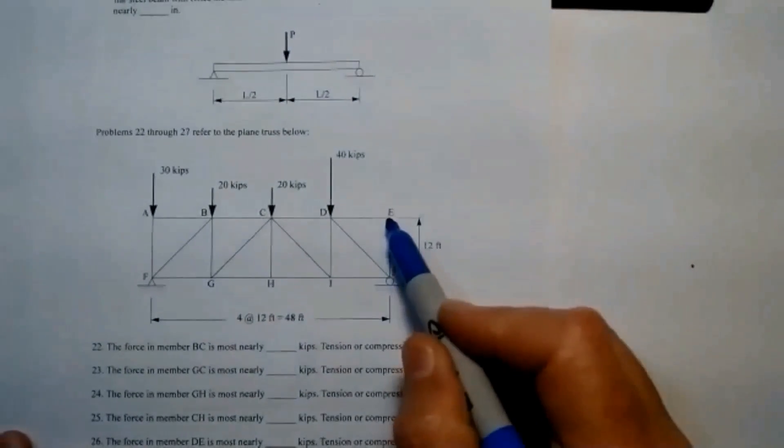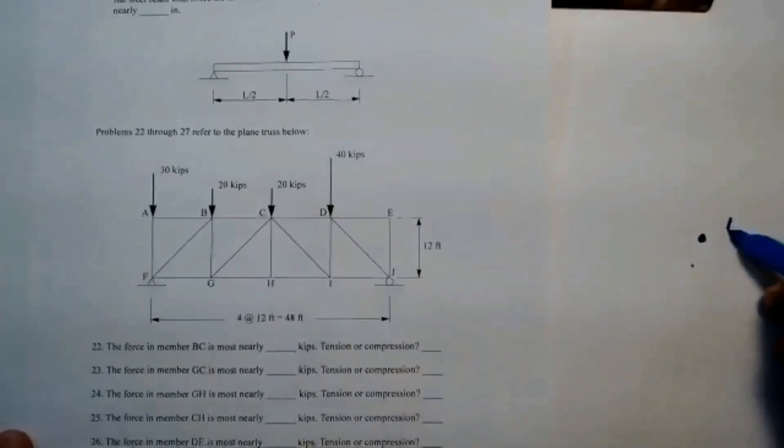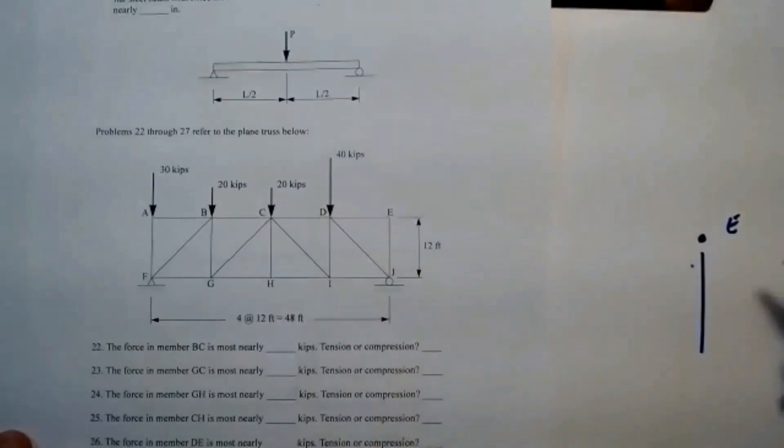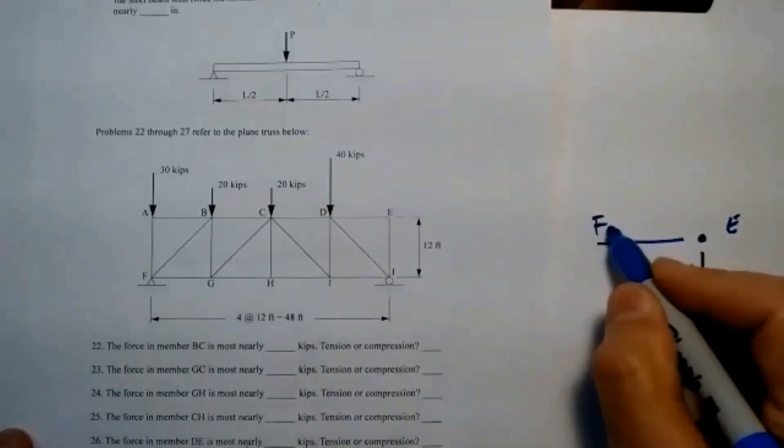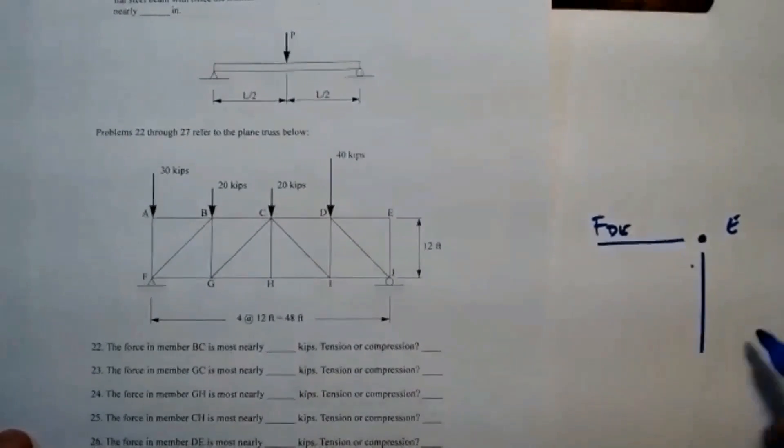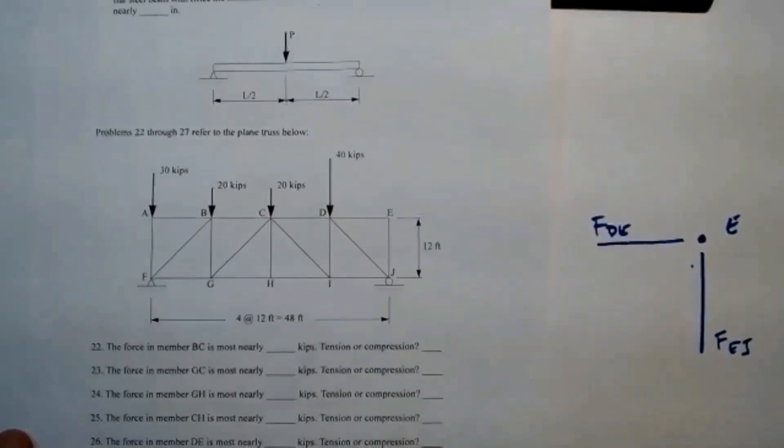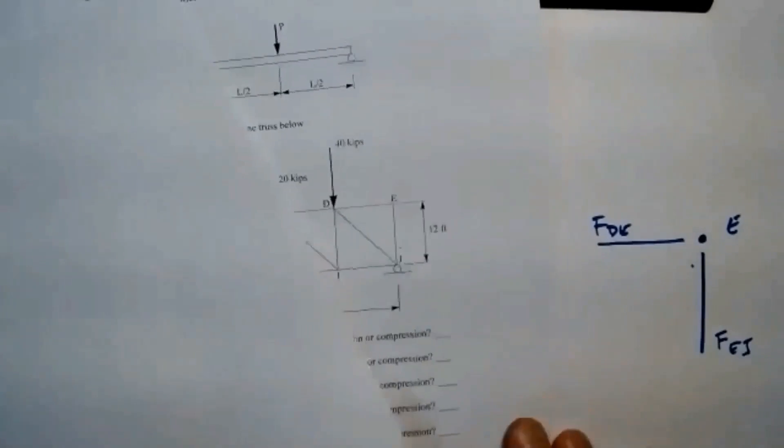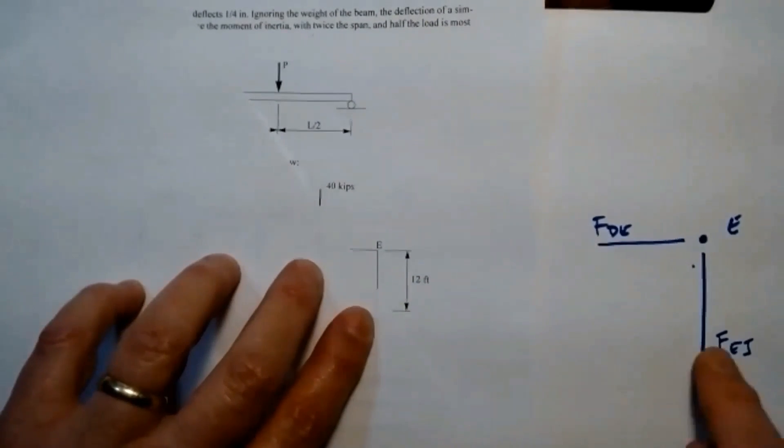Let's start up here at joint E. I'm going to draw joint E and I've got this member and I've got this member. This is kind of doing a hybrid of method of joints or method of sections. Basically what I've done is I've cut that little piece off right there and I'm showing it over here.